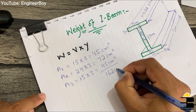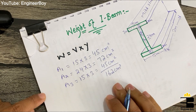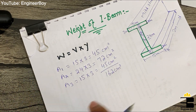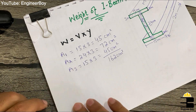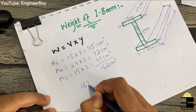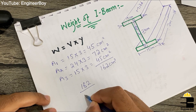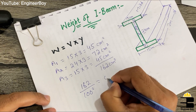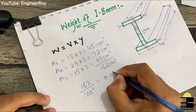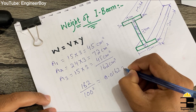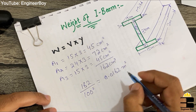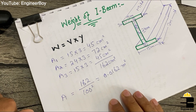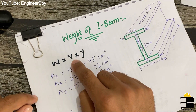Adding all three areas: 45 + 72 + 45 = 162 cm². This is the total cross-sectional area. Converting to square meters by dividing by 100²: the cross-sectional area equals 0.0162 m².